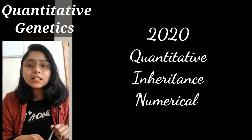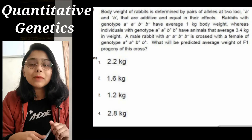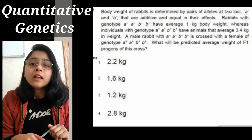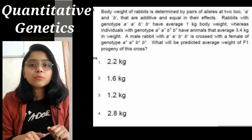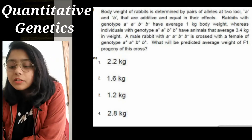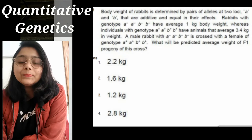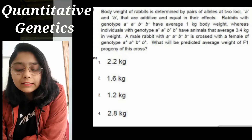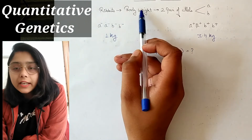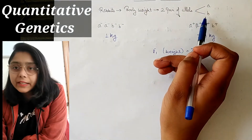आज हम इस video में quantitative genetics का 2020 में recently numerical आया था 4 marks में 5 C से, वो cover करते हैं उस numerical को कैसे easily solve कर सकते हैं. Quantitative genetics के numerical में given था rabbits का body weight two pair of alleles पे depend करता है — A and B.